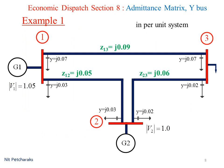Let's learn by doing an example. There are three buses and two generators at bus 1 and bus 2, whereas bus 3 is a load bus.